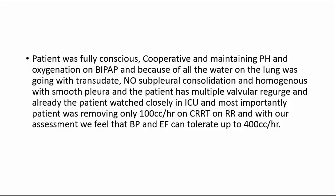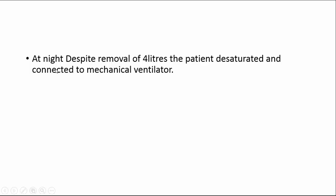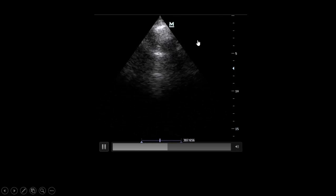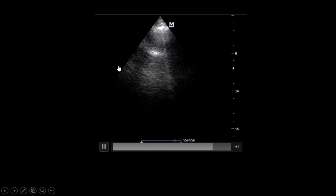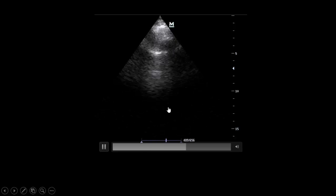We decided to remove 400 cc per hour for a good period to remove the transudate fluids. We believed at that point that blood pressure and ejection fraction could tolerate this ultra-filtration because it was near normal — almost 50 percent. So we gave a trial of BiPAP with proper ultra-filtration. Despite removing four liters from the patient, the patient desaturated and was connected to the mechanical ventilator. This is the second critical care ultrasound scan — A-lines start to appear, meaning we removed fluid from the lung.